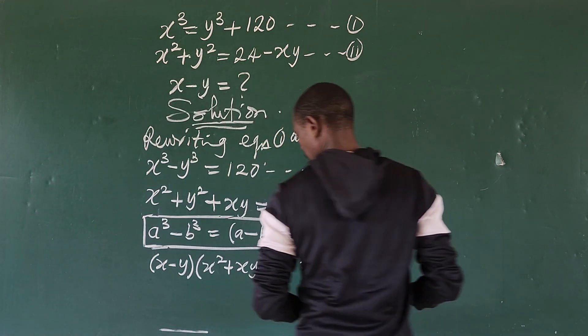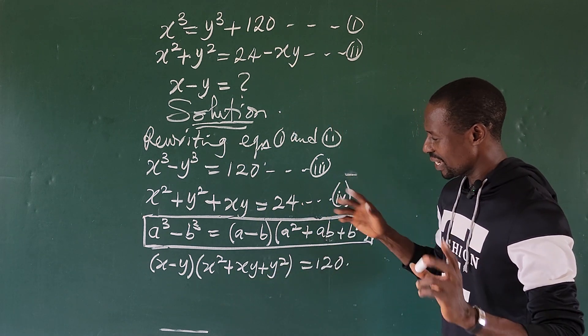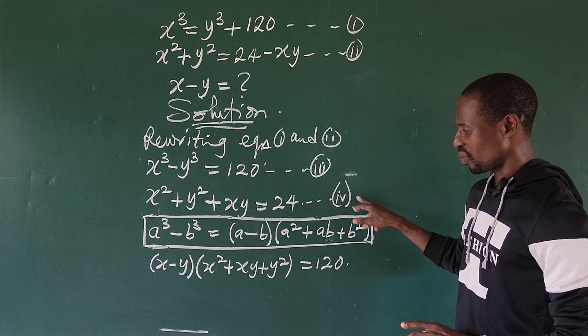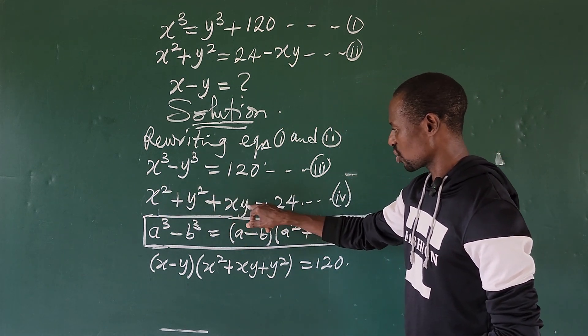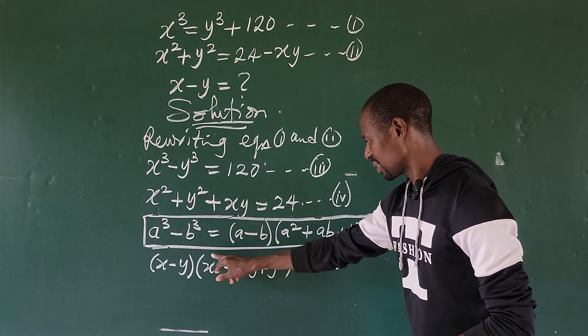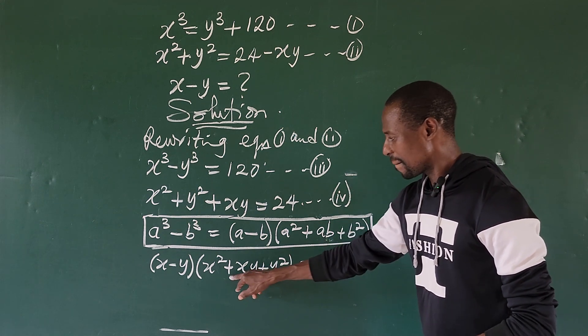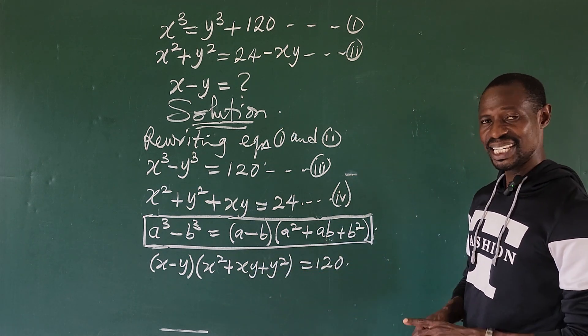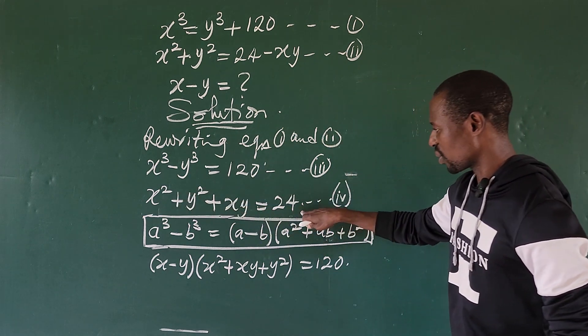Now if we look at equation four, we have something of that kind. Look at this: x² + y² + xy. And equation four equals 24. So we can replace this with 24 also.